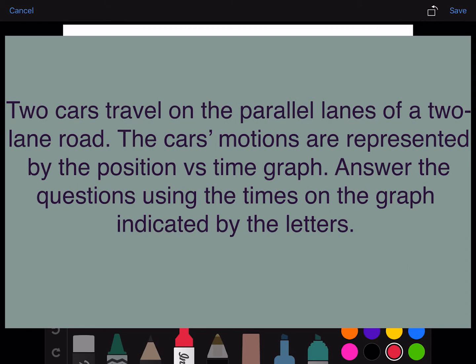Two cars travel on the parallel lines of a two-lane road. The car's motions are represented by the position versus time graph shown in the figure. Answer the questions using the times from the graph indicated by the letters.